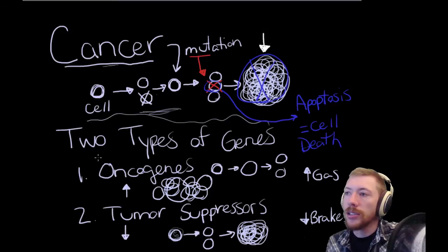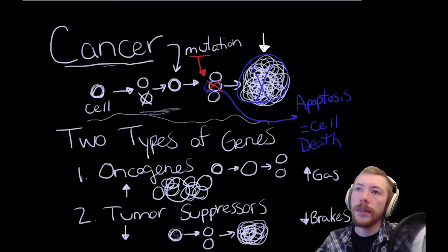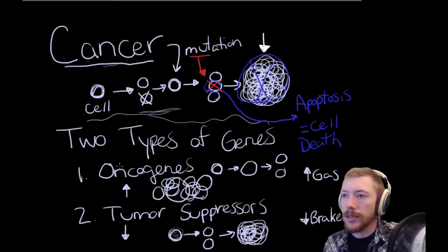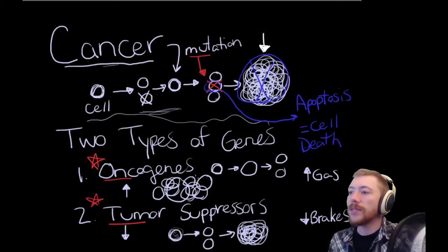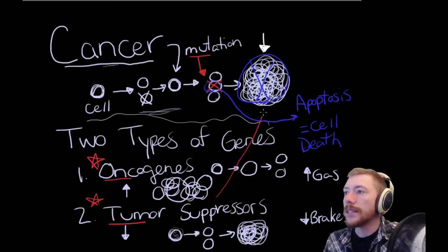But when you have mutations in a gene like an oncogene or you have a mutation in your tumor suppressors, you're very likely to end up with this type of problem.